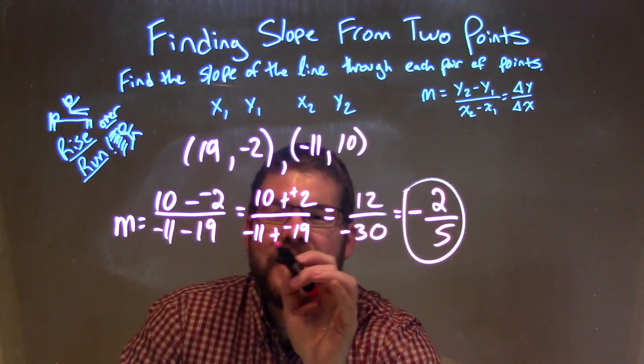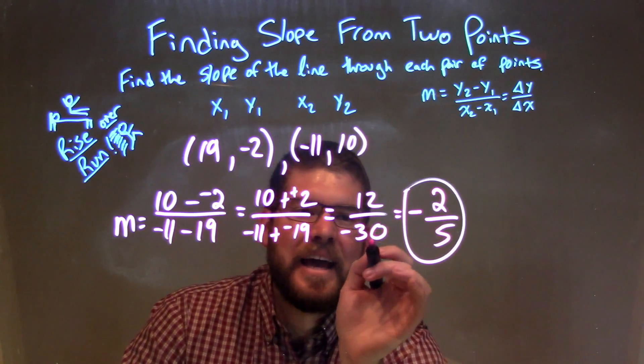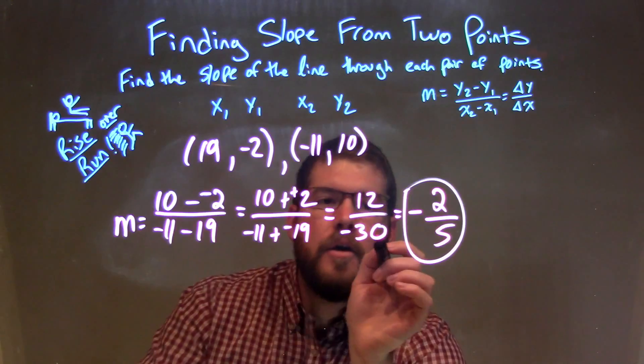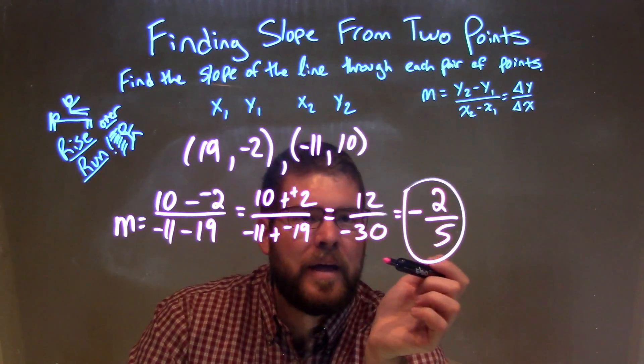10 plus positive 2 is 12, and negative 11 plus a negative 19 is a negative 30. So then from there, we need to simplify that fraction.